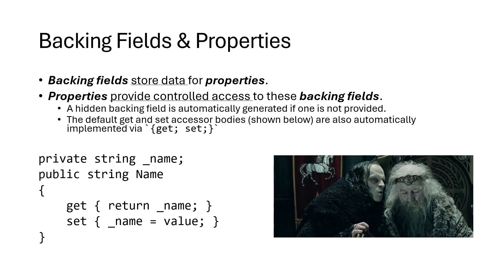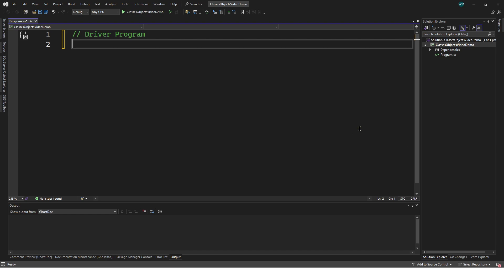The default get and set accessor bodies: here I have this get which says return name, and then I have a set that says name is being assigned some value. These are not the defaults — this is a little different than what we saw. I want to show you what that looks like with the default implementation that we've already seen.